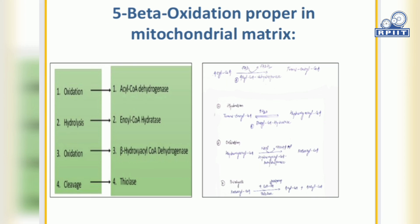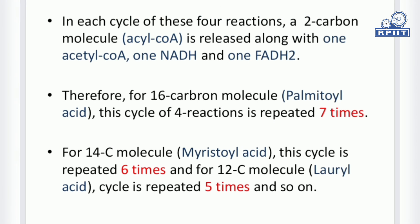Inside the mitochondrial matrix, beta oxidation properly occurs. This process involves a series of four reactions: first is oxidation, second is hydration, third is oxidation again, and the last is cleavage. In each cycle of these four reactions, a two-carbon molecule — acetyl coenzyme A — is released along with one molecule of NADH and one molecule of FADH2.